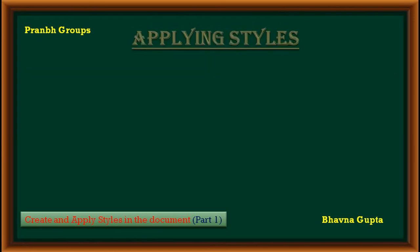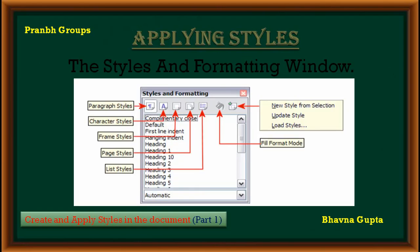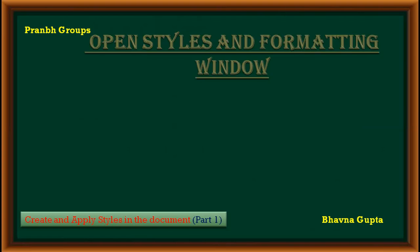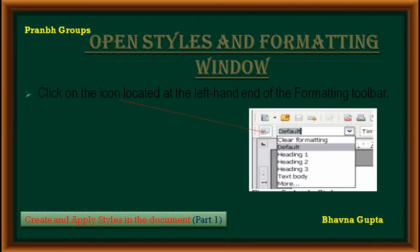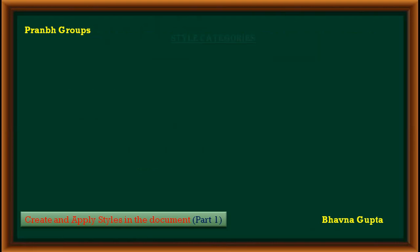How to apply a style in our document: styles can easily be applied by means of the Style and Formatting window. You can use this window to apply a different style in your document. There are three methods to open the Style and Formatting window. First, click on the icon located at the left end of the formatting toolbar. Second, select Format > Style and Formatting. Third, and very easy, press the F11 function key.